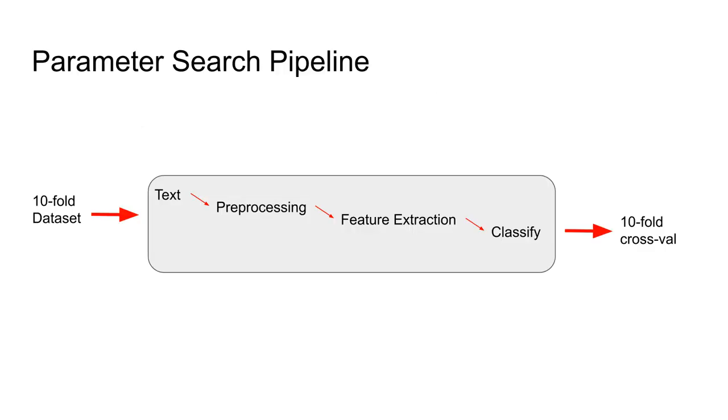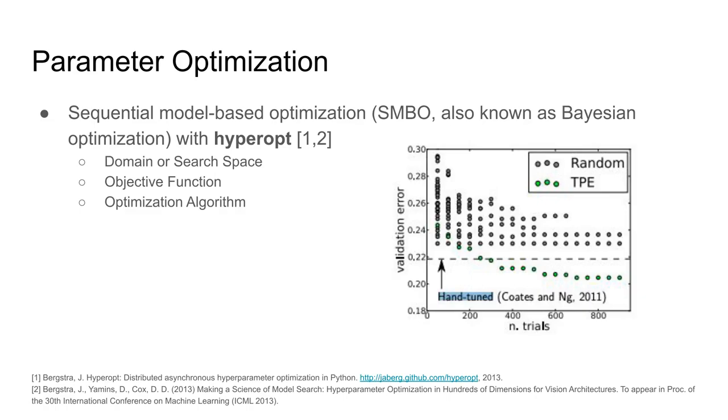This is the parameter search pipeline. The training dataset is split by authors and a ten-fold cross-validation strategy is used. A parameter optimization is done in order to find the best parameters for the preprocessing, the feature extraction, and the classifier.